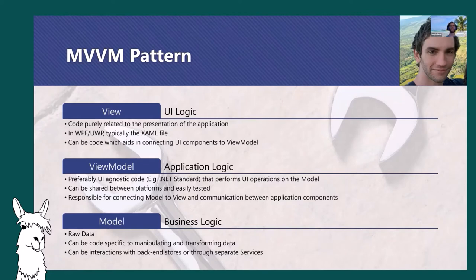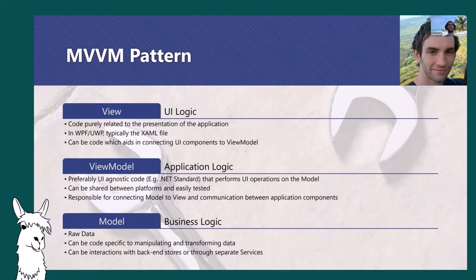The last component is the model, which typically represents the business logic or application domain — the raw data items your application works with. It can also contain code to directly manipulate and transform data, and in some cases interact with services or backend stores. As long as you keep the separation of these three main components, you may see slightly different variations depending on the team. Some developers place services directly within view models with models as raw data, others include services in models. The important aspect is to separate your code base into these three main building blocks.